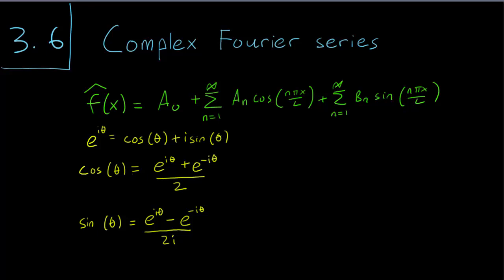To make things a little bit easier on us, we want to simplify the sine expression a little bit. Note that i² = -1, and therefore i = -1/i, or 1/i = -i.